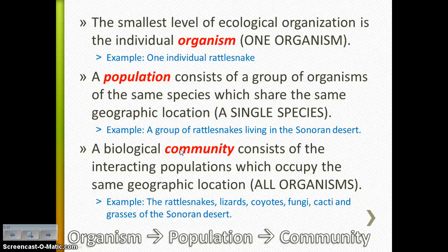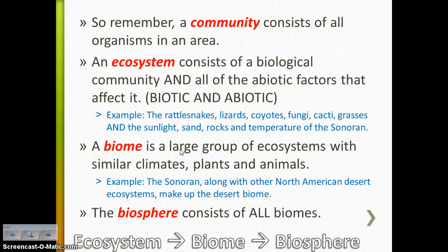A biological community is all of the interacting populations within that same area. So our population was a group of rattlesnakes. All of the populations would be the rattlesnakes, the lizards, the coyotes, the fungi, the cacti, the grasses — all of the biotic factors that make up the Sonoran Desert. So community is all the biotic factors.